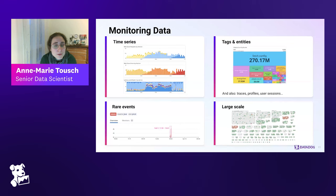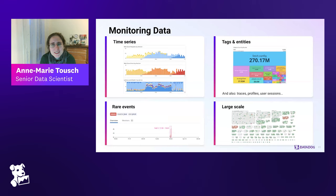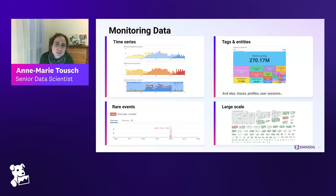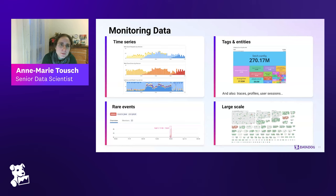Two very important properties of this data: we care about anomalies, which are rare events — they are unexpected, things that just don't look like others. And we have very large-scale data. We ingest, I think, trillions of events per day or something like that. That's what makes it difficult, challenging, and interesting. It's also very much developer data — and as data scientists, we actually use Datadog ourselves, so we care a lot about using the data well.